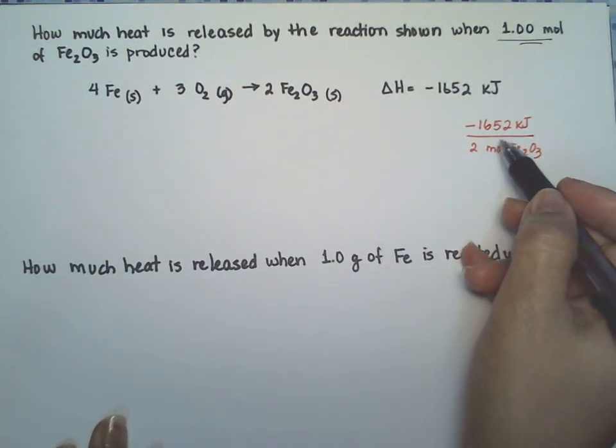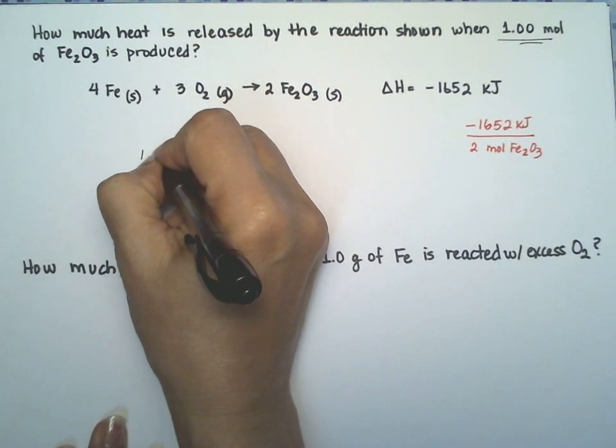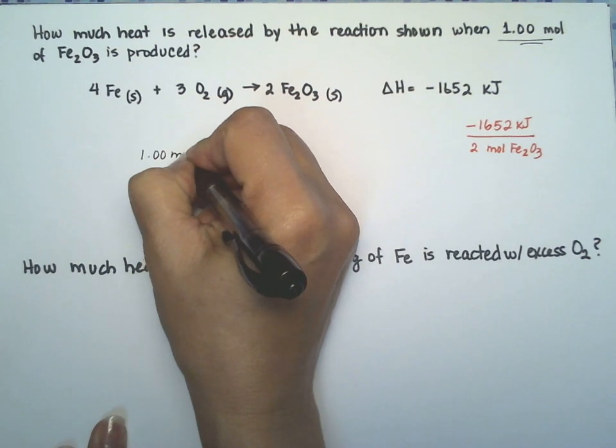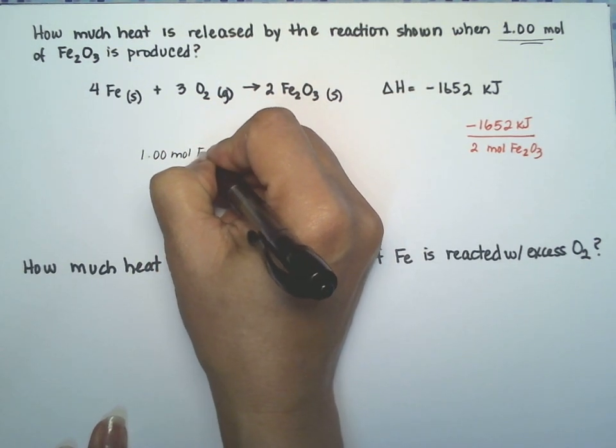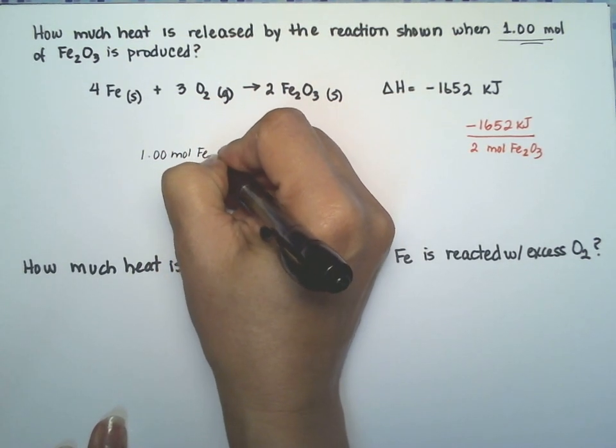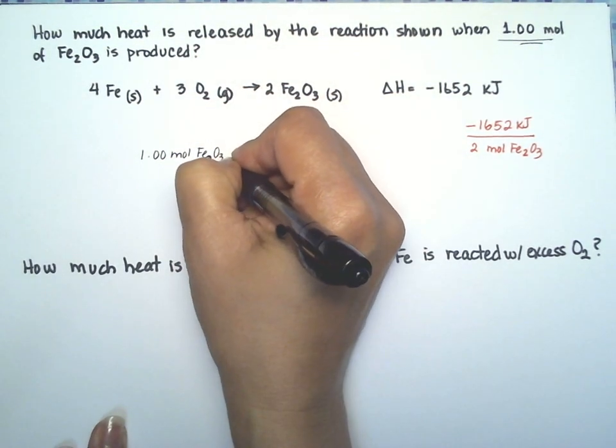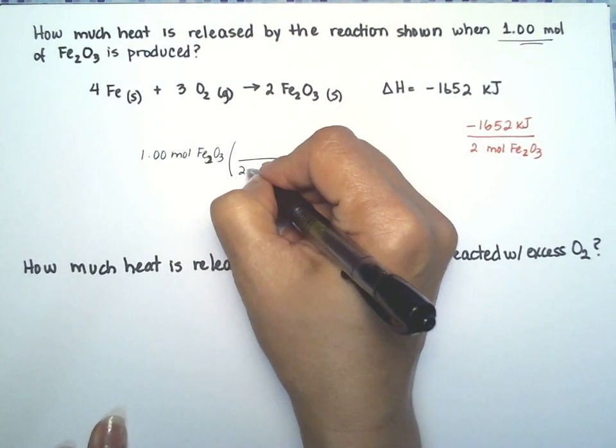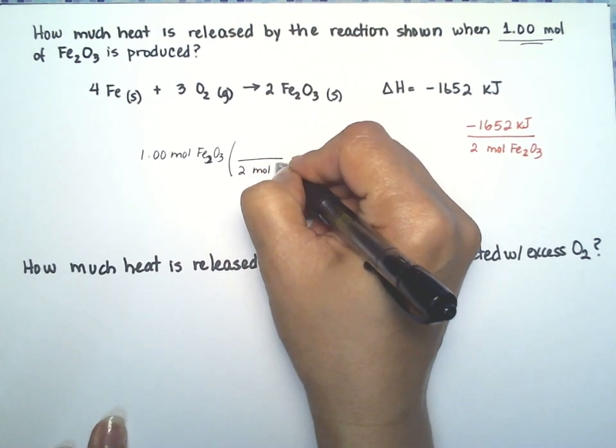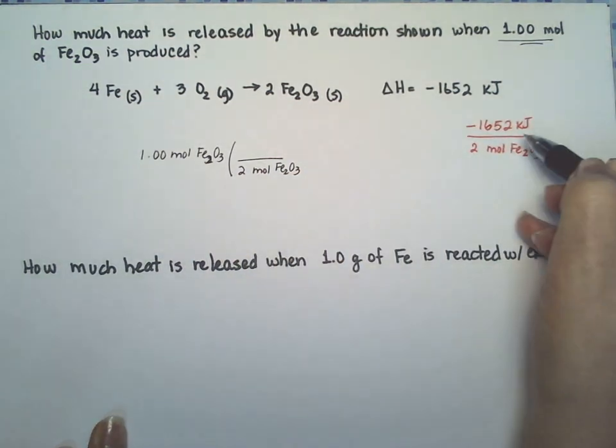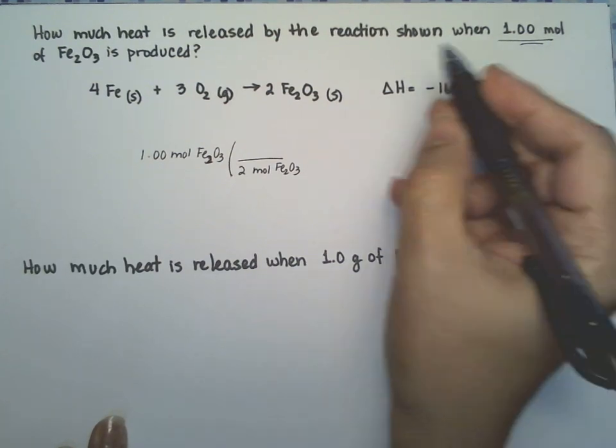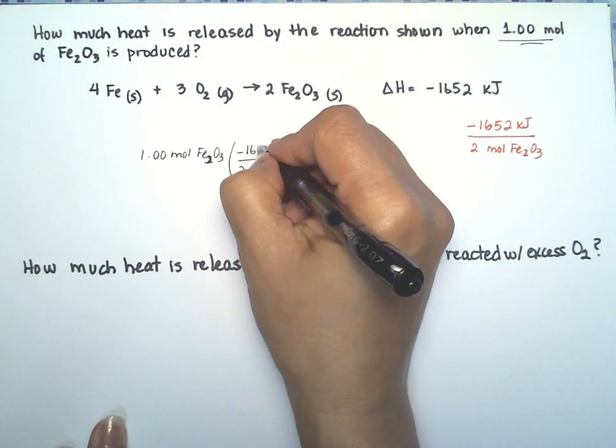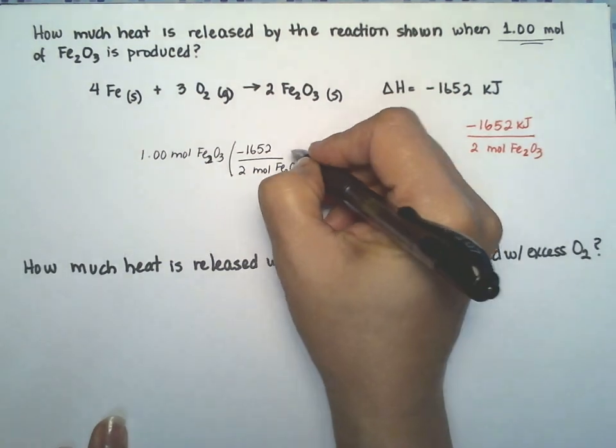If you want to do it for just one mole, let's do the conversion. We're going to use this conversion factor. We know that two moles of the iron oxide release 1,652 kilojoules.